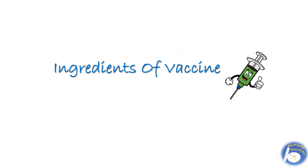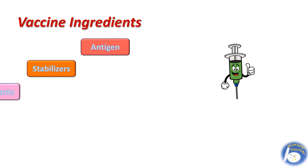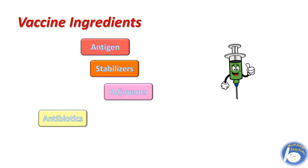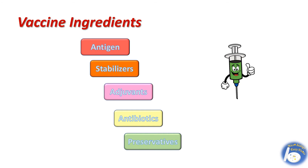And now, what are the ingredients of a vaccine? A vaccine contains antigens, stabilizers, adjuvants, antibiotics, and preservatives.